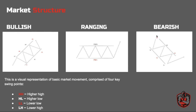For a downtrend, the highest point is the higher high. Price impulses down, creating a lower high, pulls back but closes below that higher high, therefore leaving us a lower high. Then price impulses and closes below the previous low, therefore creating a lower low.